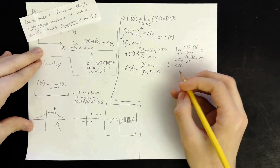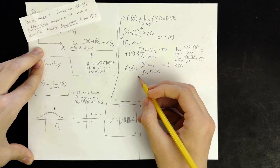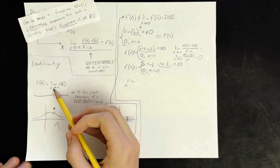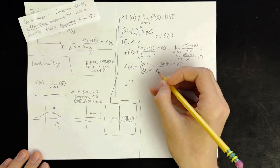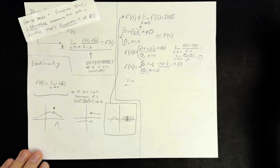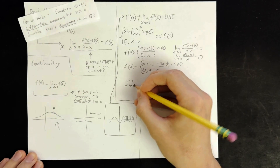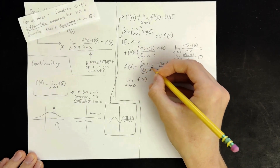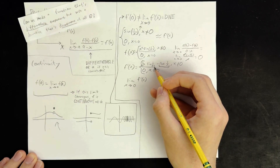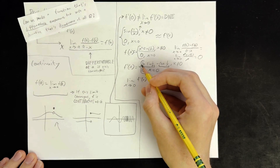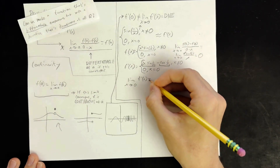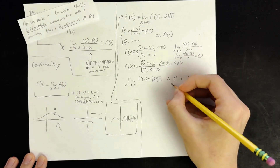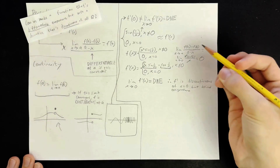We can see that the derivative is discontinuous when x goes to zero because of the cosine of one over x term. If we try to apply the definition of continuity, we run into an issue: the cosine term is DNE, and the other term goes to zero by the squeeze theorem, so the whole limit is DNE. So we have a function whose derivative is discontinuous at one value, but it is defined — and differentiable — everywhere, including at that value.